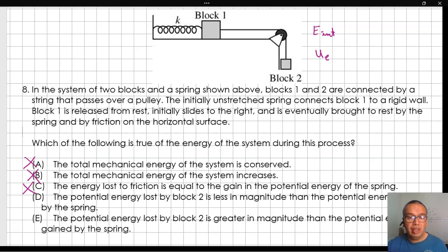D. The potential energy lost by block 2 is less in magnitude than the potential energy gained by the spring. In reality, block 2 has a change in gravitational potential energy because it decreases in height. That energy takes up two different forms: internal energy dissipated by the friction force and elastic potential energy stored in the stretched spring. Therefore, the elastic potential energy has to be less than the gravitational potential energy that block 2 had at the beginning. The actual situation is opposite to the idea proposed here, and is expressed correctly in option E.